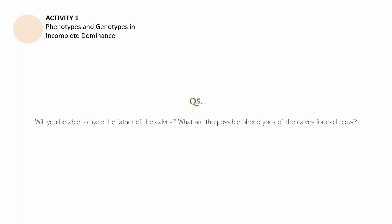Question number five is as follows. Will you be able to trace the father of the calves? What are the possible phenotypes of the calves for each cow? Question number six: Do you think you will make Mang Marsalino happy about the result of your investigation? Question number seven: How are you going to explain it to him? Question number eight: How would you apply what you learned to improve the breeds of livestock in your area? Question number nine: What possible suggestions can you give to animal breeders in your area? Now that we have encountered the questions, let us deal with the answers. I hope that you have already finalized your own answers before you proceed to this part of this video lesson.